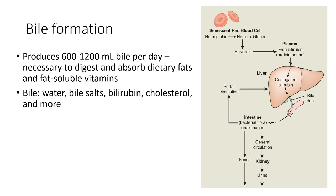The liver produces 600 milliliters up to 1,200 milliliters of bile per day. We need bile to digest and absorb dietary fats and our fat-soluble vitamins. Bile contains water, bile salts, bilirubin, cholesterol, and some byproducts of metabolism. Of these components, only bile salts, which are formed from cholesterol, are important in digestion. The other components of bile depend on the secretion of sodium, chloride, bicarbonate, and potassium by the bile ducts.